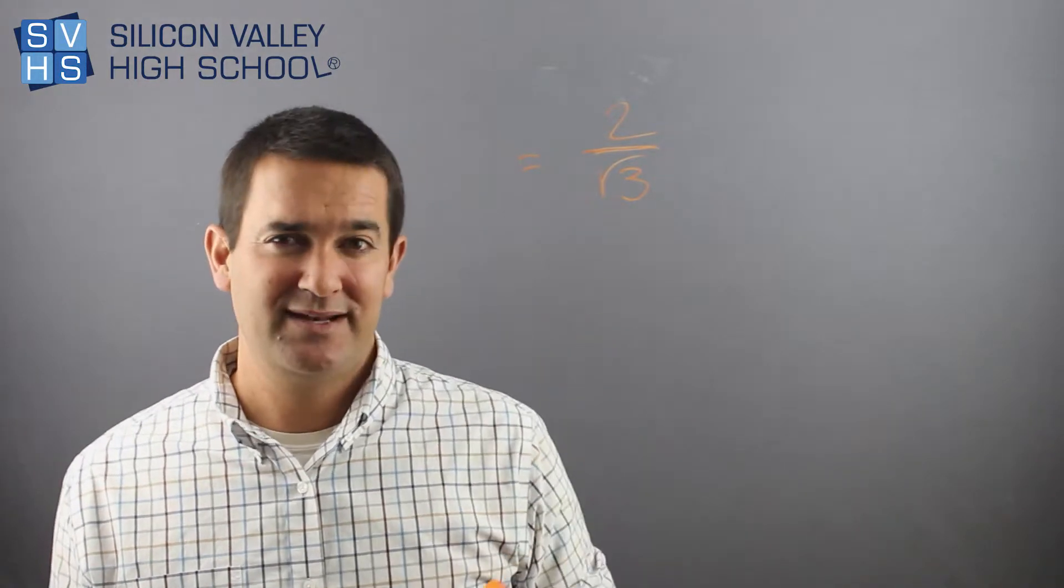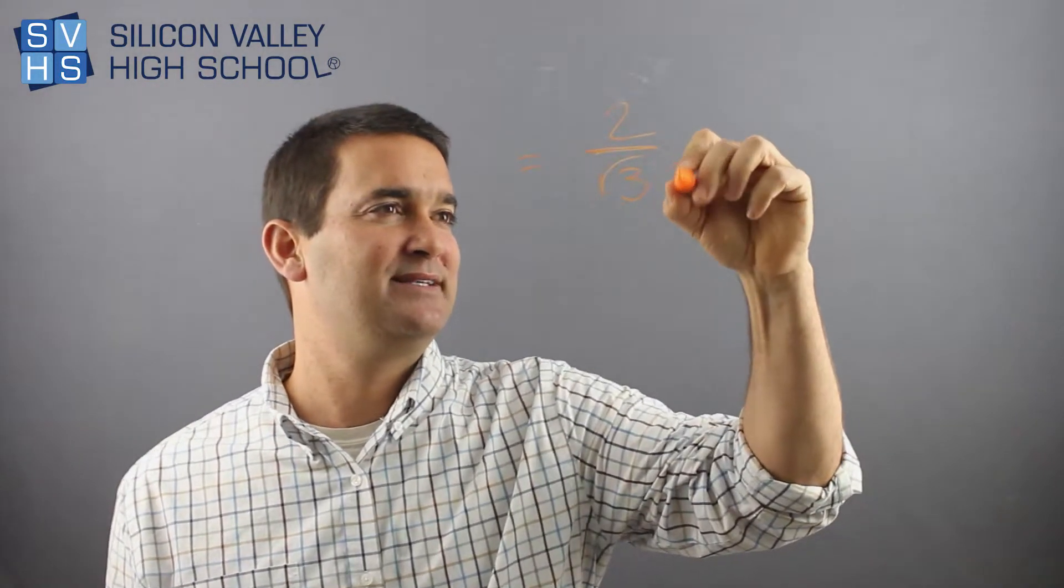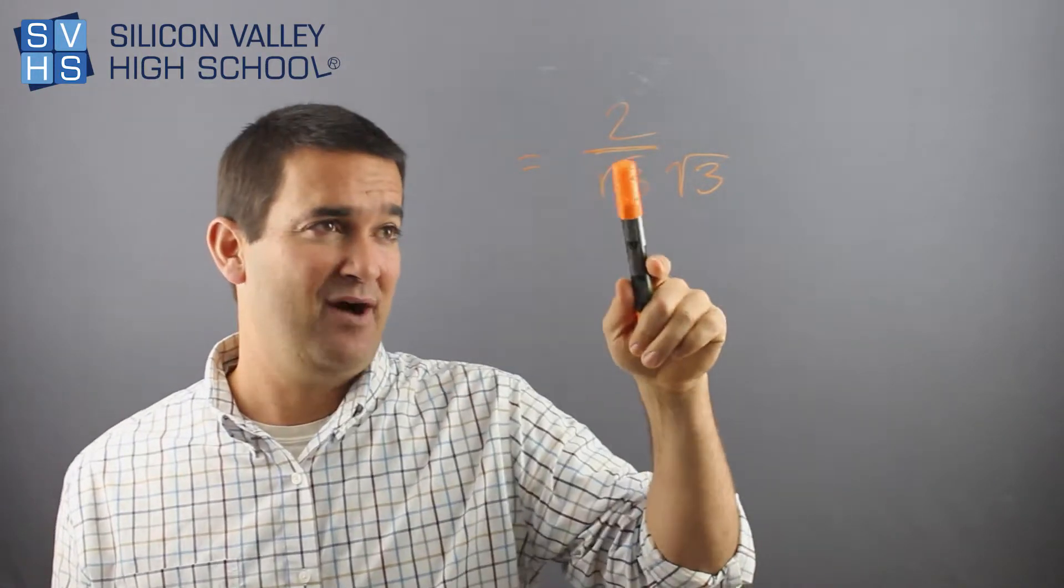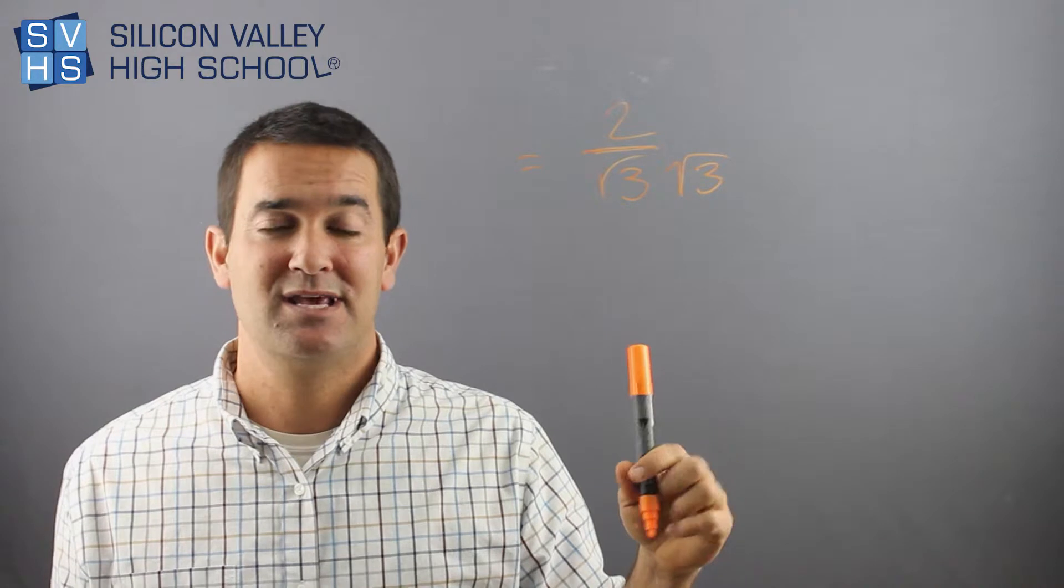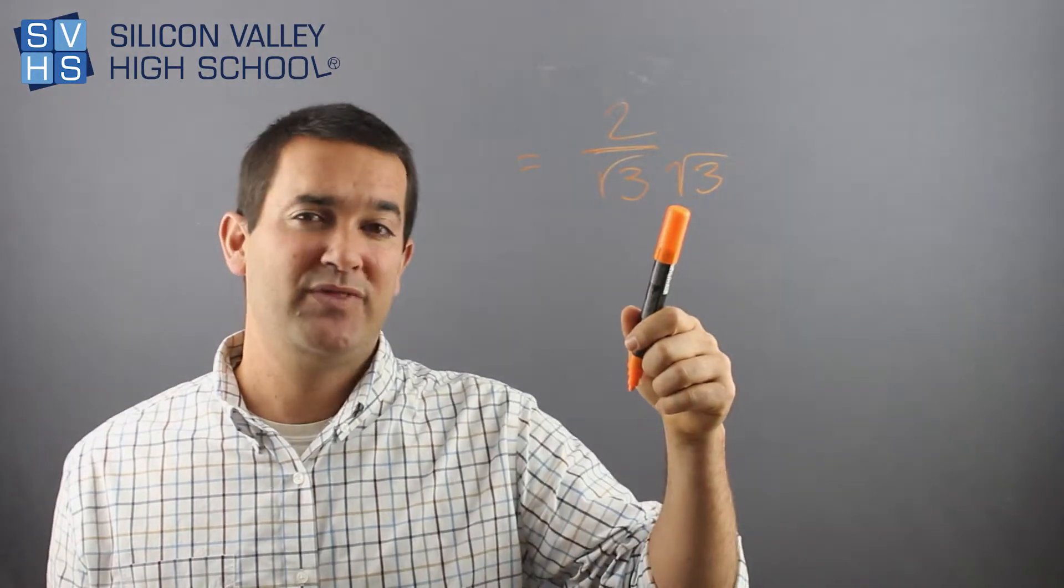And the way to do it is if you understand the nature of roots, really if you multiply this by itself, by definition you'll have the square root of 9, which is just 3, the root disappears. But you can't do anything to the bottom without doing it to the top.